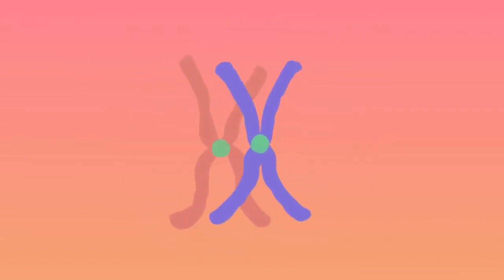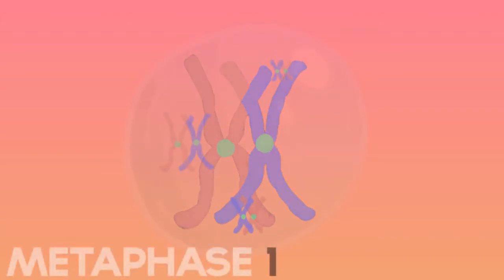Crossing over is a random process where the homologous chromosomes exchange chromosomal segments. This process can help make an offspring more diverse and distinct.